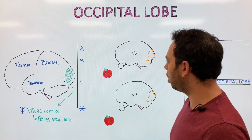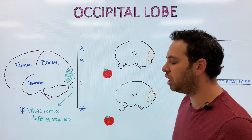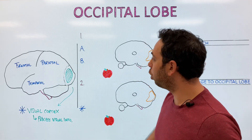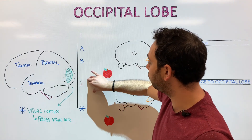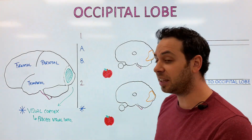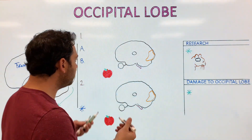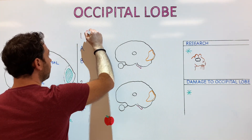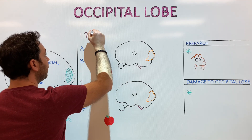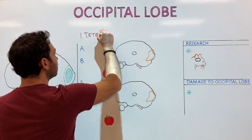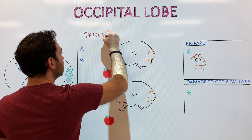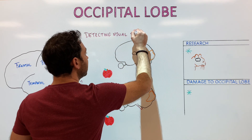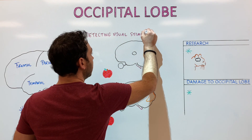So where should we start? How does information actually reach the brain, and then what do we do with it? We're going to divide this into two different functions and subareas. The first function is that the occipital lobe, and of course the visual cortex, helps with detecting visual stimuli.